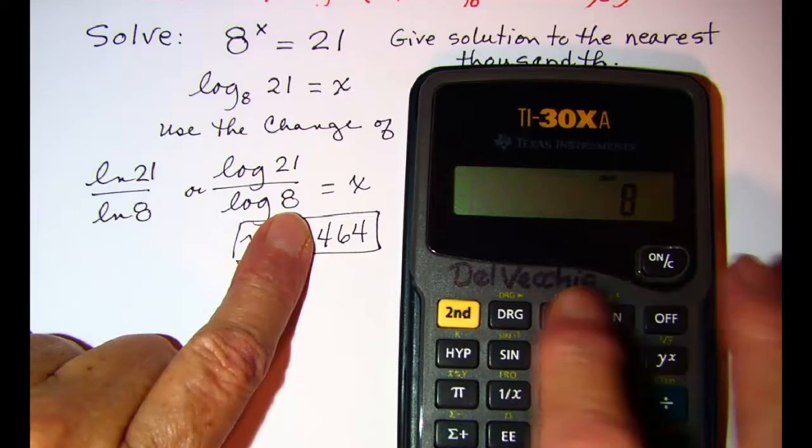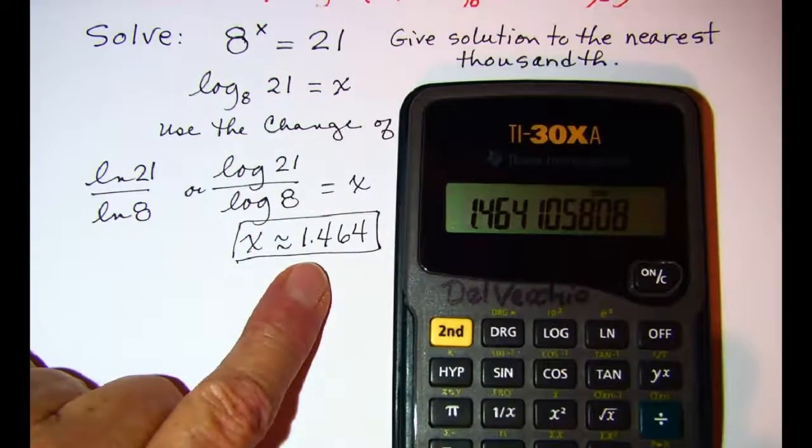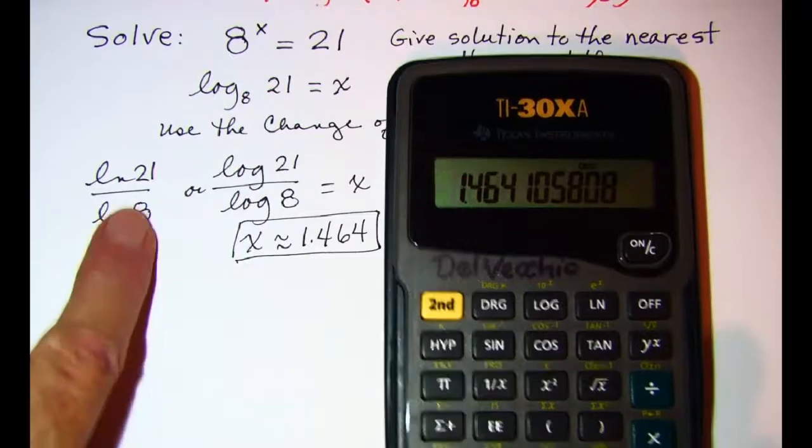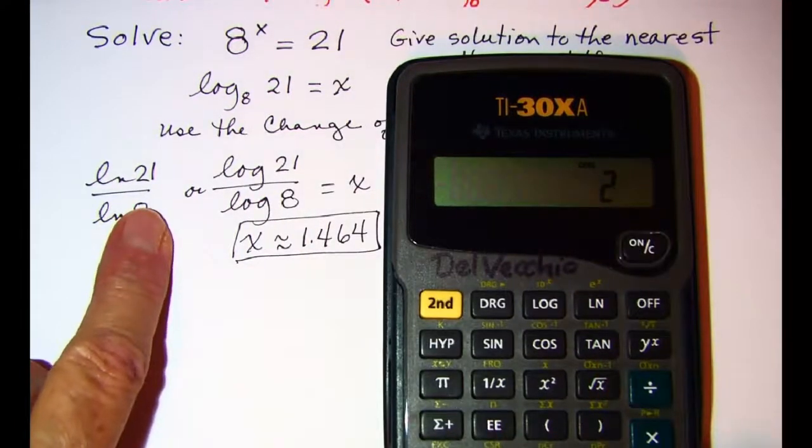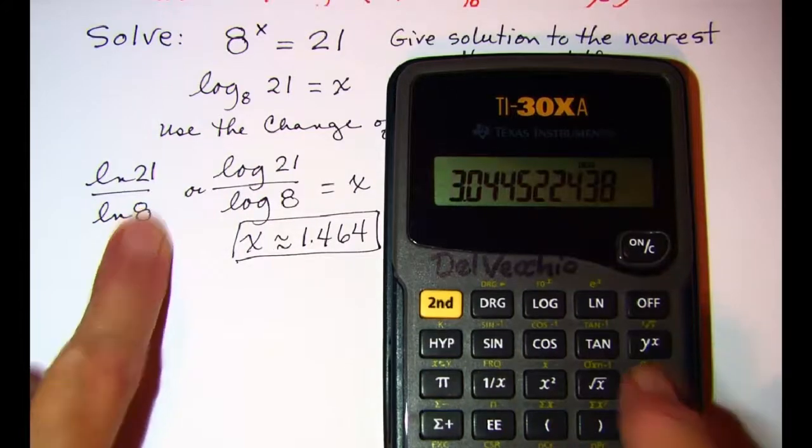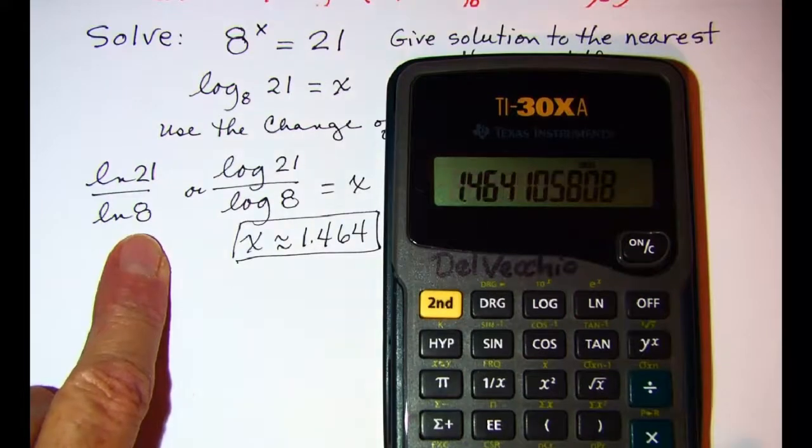Hit the log button and then equals. We get the same value. Again if we're using ln's, we would take 21 ln divided by 8 ln, hit equals.